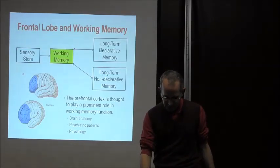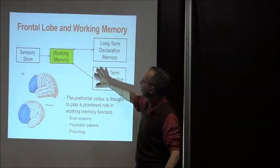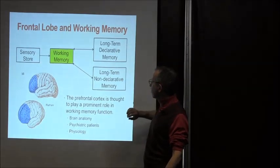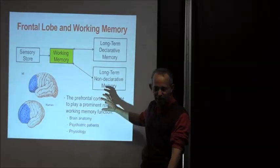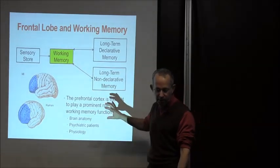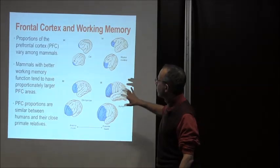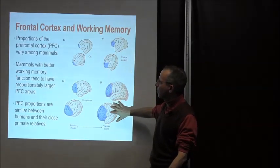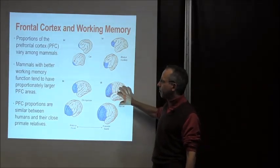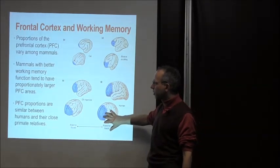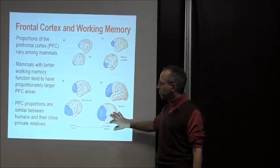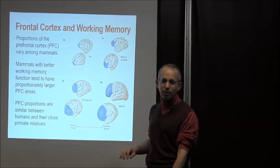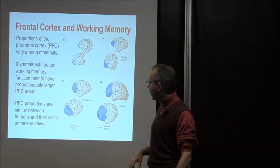Now let's talk about the brain substrates, particularly the frontal lobes. The prefrontal cortex is thought to play a prominent role in working memory function. Prefrontal cortex size varies among different mammals — those with better working memory function tend to have a proportionally larger prefrontal cortex. The proportions are similar between humans and our closest primate relatives, suggesting it's not the volume that drastically differentiates us.